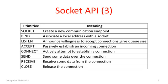Here is the API. This table shows all the main API calls used for sockets. The socket call is used to create the socket structure itself, creating a new communication endpoint that an application can use to access the network. There is also a send call, which an application uses along with its socket structure to reliably send bytes to an application elsewhere across the network. And there's a receive call, used by the application on the other side to receive that information.